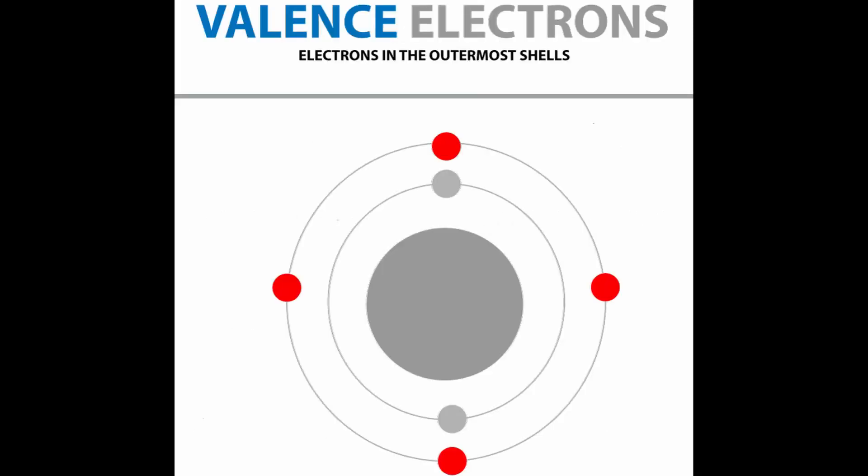Valence electrons determine a lot, properties based on how much they got. Negative particles, far you can tell, found all the way in the outermost cell.